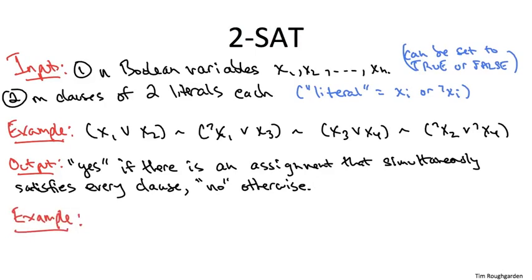The 2SAT instance that I gave you as an example is indeed satisfiable. There's actually more than one satisfying assignment, but here's a way to produce one. Let's start with the first clause. To satisfy it, either x1 or x2 has to be set to true. So let's set x1 to be true.